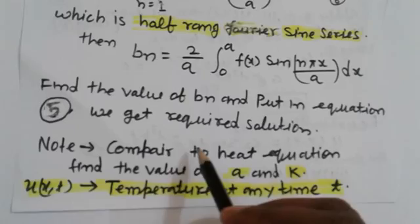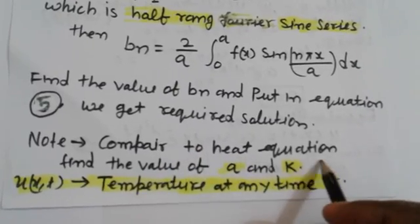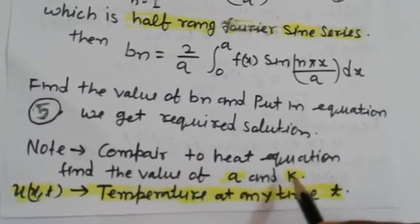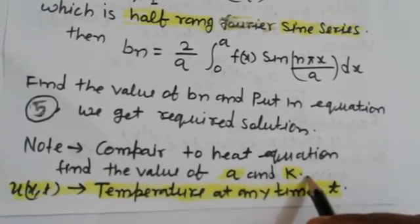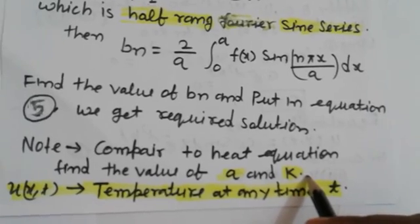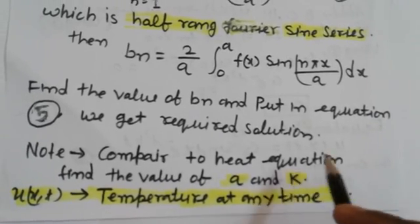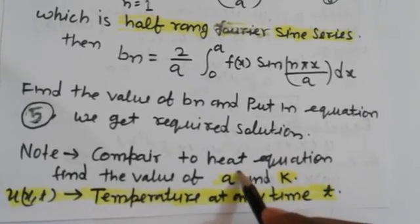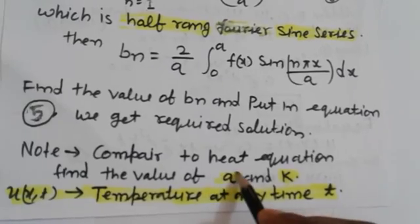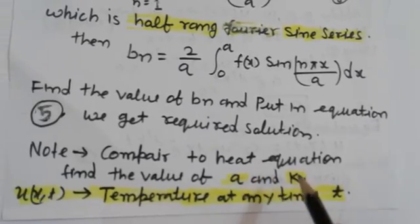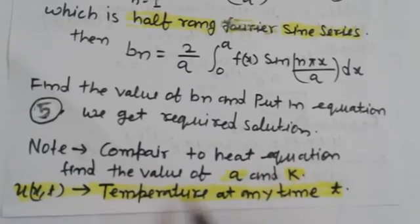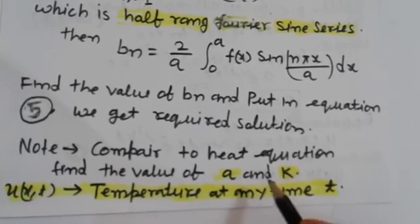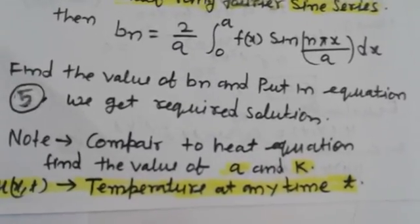Note: Compare with the heat equation to identify the values of a and k. The value of a is determined from the boundary conditions. Here, u(x,t) represents the temperature at any time t.